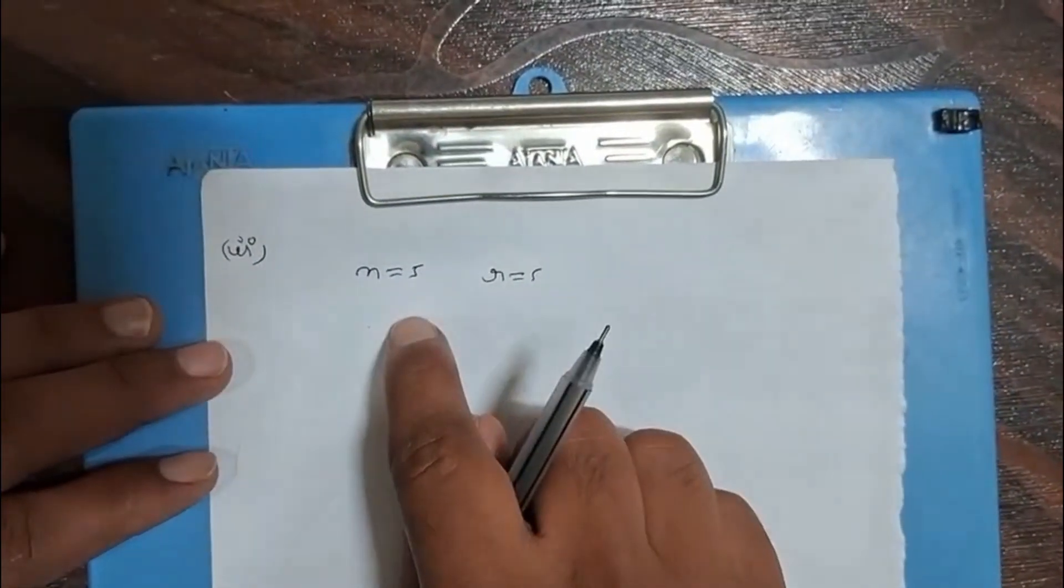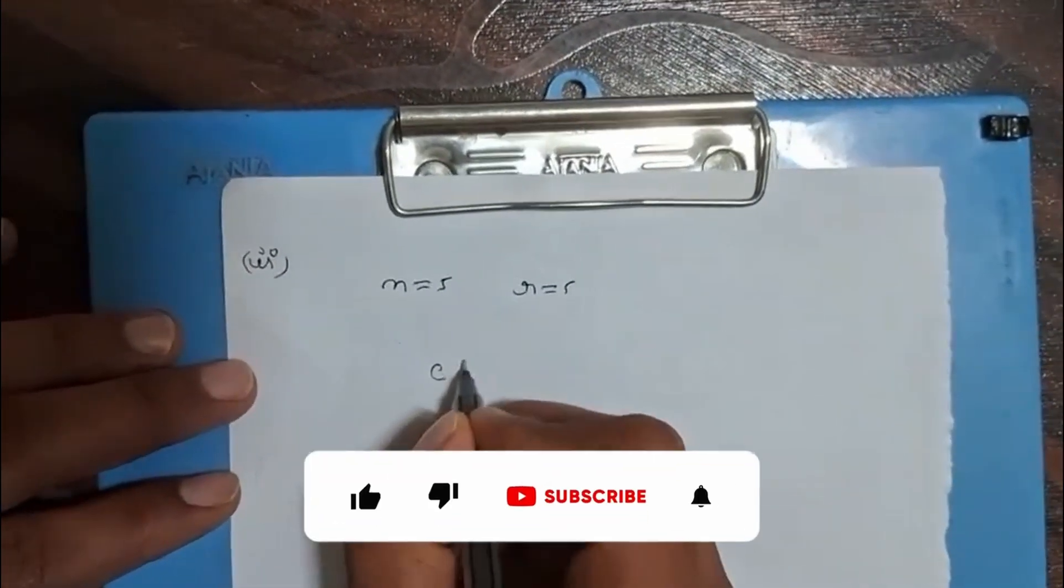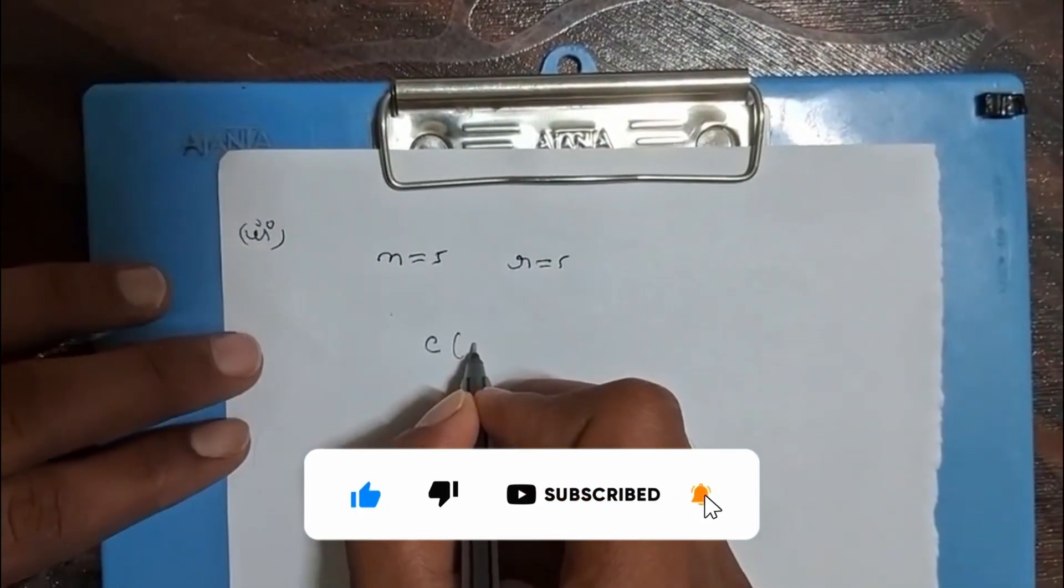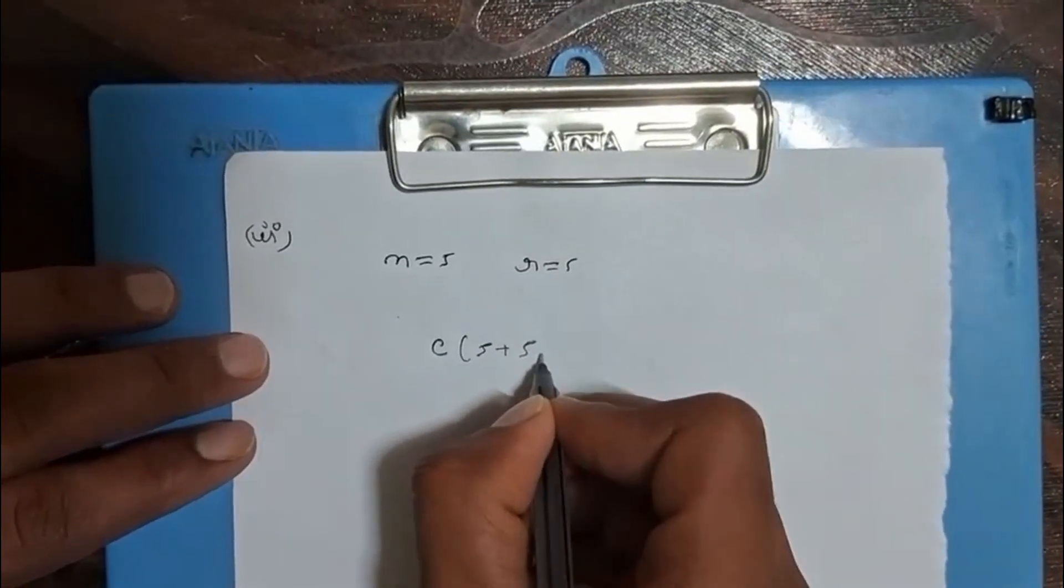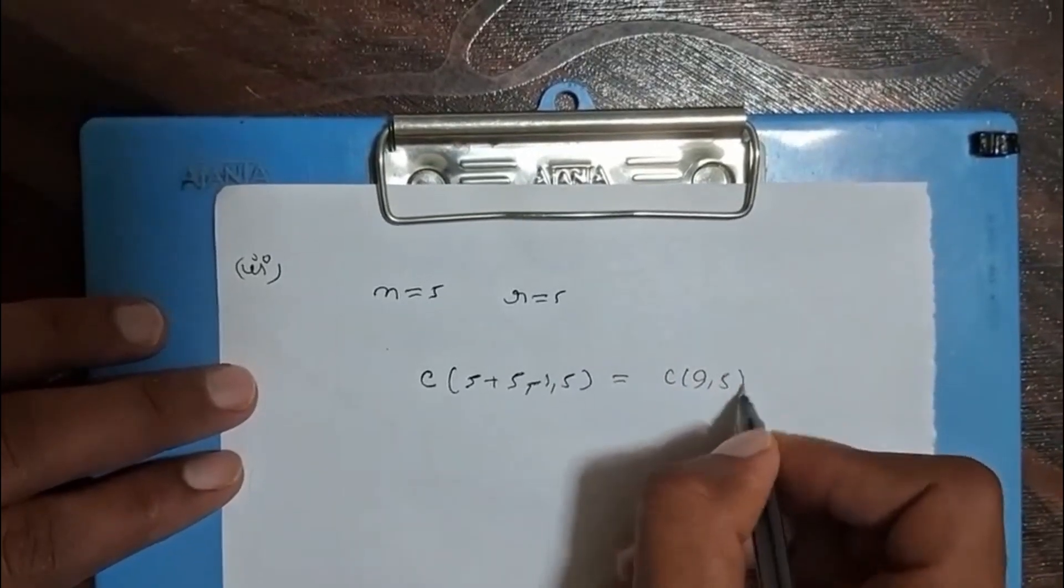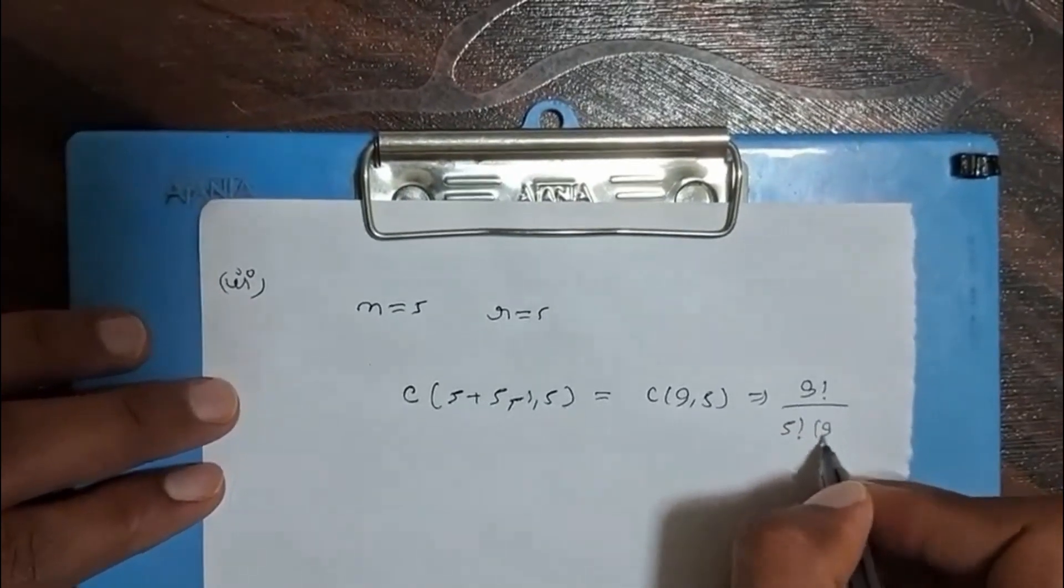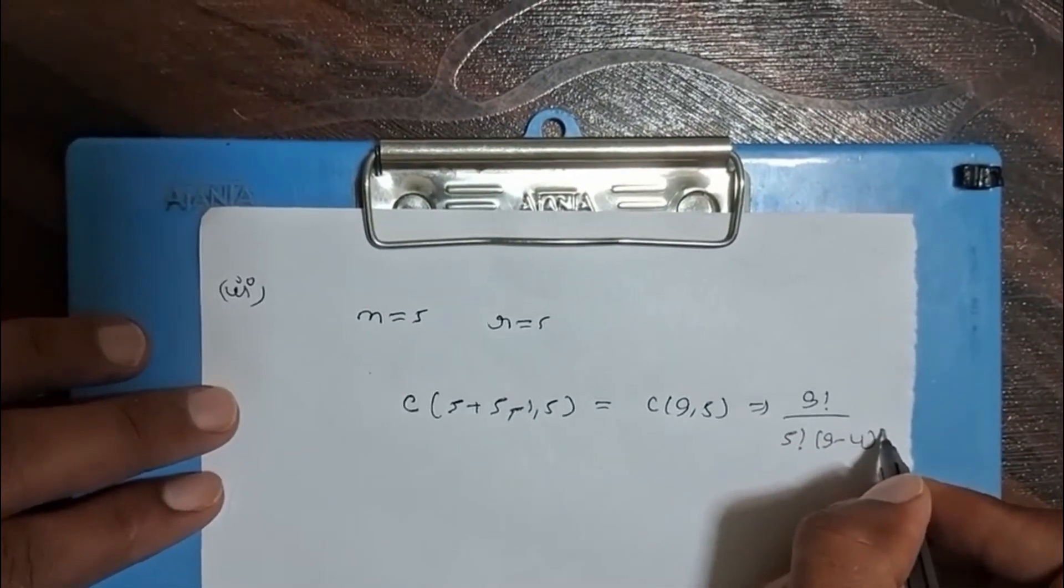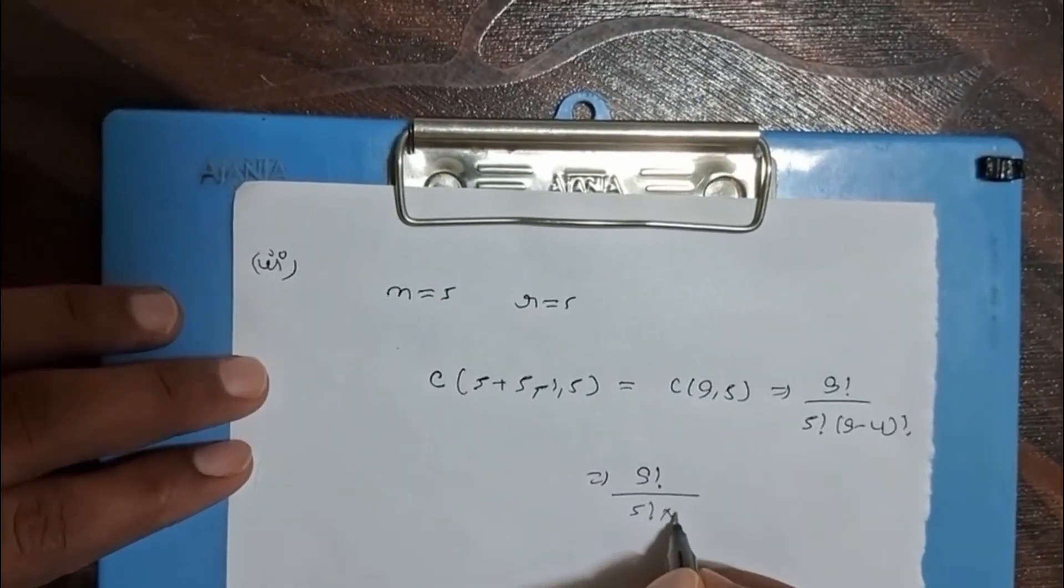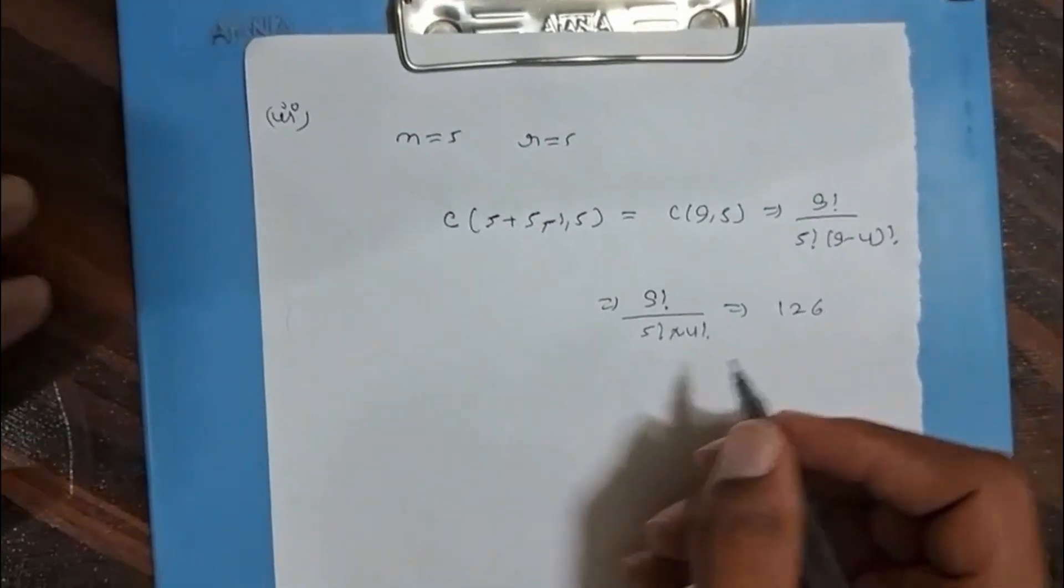The formula is the same, but we have to remember the concept. C(5+5-1, 5) = C(9, 5) = 9! / (5! × 4!) = 126. So in the third part...